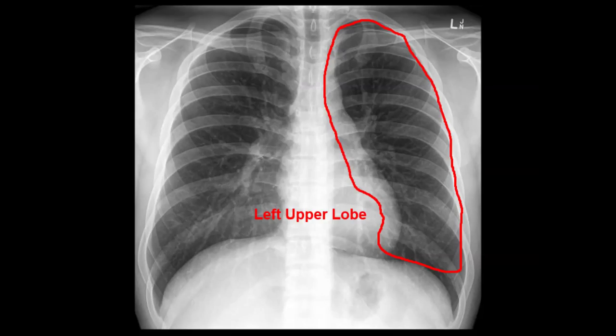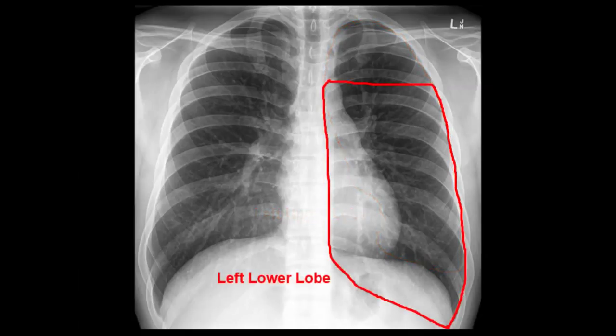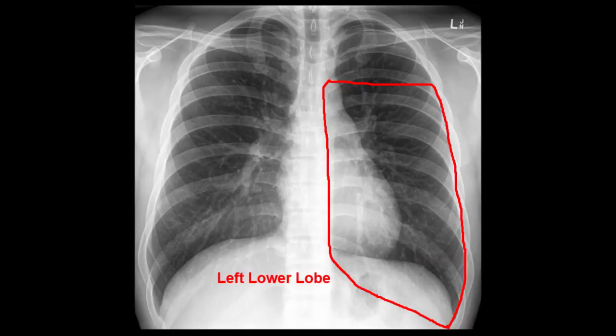The left is a bit easier, with only two lobes. The upper lobe looks like it takes up almost the whole lung field and touches the left heart border. The left lower lobe is similar to the right and shares a border with the left hemidiaphragm. Finally, let's look at the lung hyla.